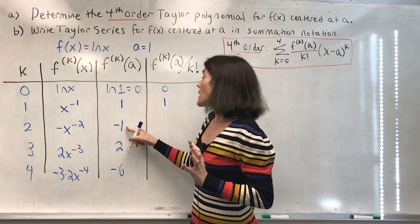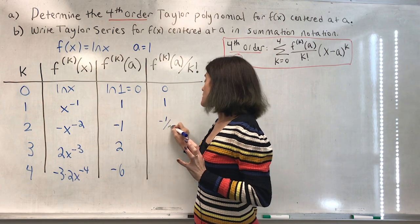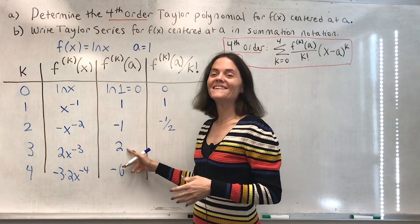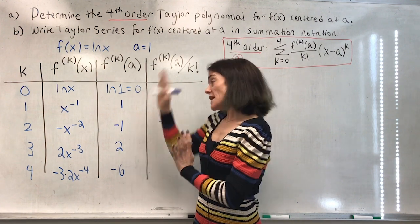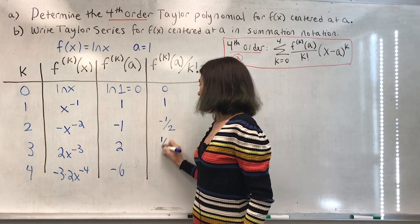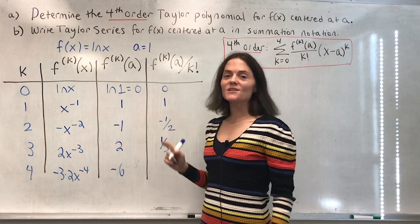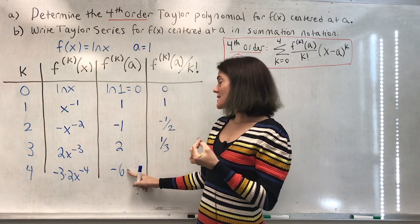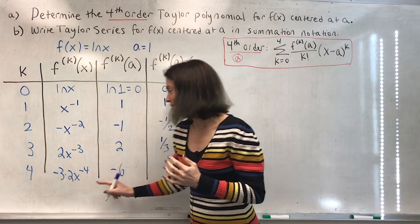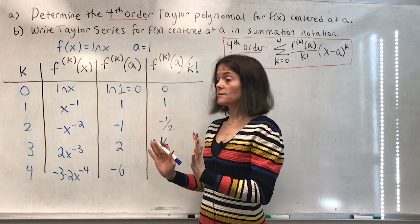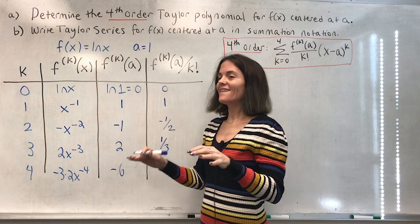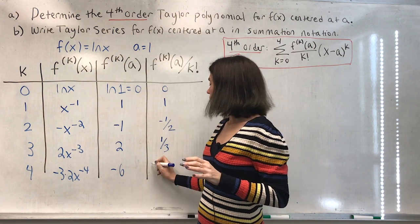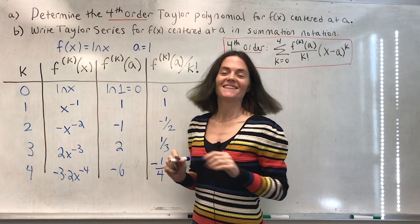1 factorial is 1, 2 factorial is 2, 3 factorial is 3 times 2. Take 2 over 6, we get a third. Now 4 factorial is 4 times 3 times 2 times 1, and if we have negative 6 — which is 3 times 2 — over 4 times 3 times 2, the 3 times 2 cancels and we get negative one-fourth.